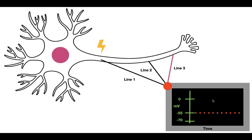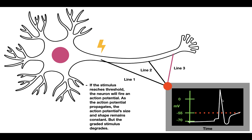At line three, we see the same thing: the initial graded stimulus decreased in strength, but the action potential maintained its strength. From this experiment, when the stimulus reaches threshold, the neuron fires an action potential, and as it propagates, the action potential's size and shape remain constant. The graded stimulus that started it degrades over distance, but the action potential itself is self-sustaining.